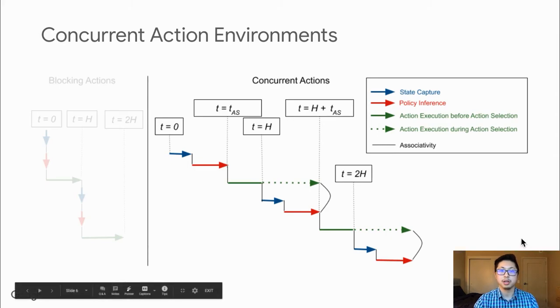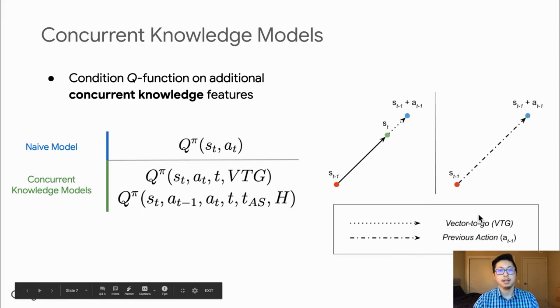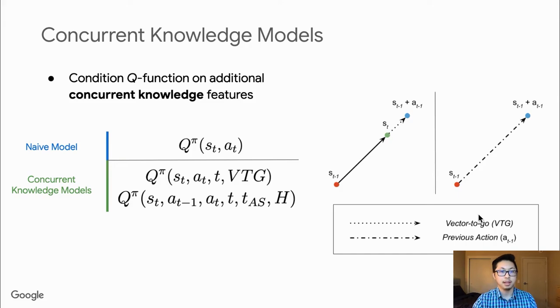To learn in such environments, we introduce concurrent Q-learning models. These condition on additional features that encapsulate information about the concurrent nature of the environment. In the context of off-policy value-based learning, we show that our updated concurrent Q-function is able to maintain theoretical convergence guarantees. More details can be found in our paper.